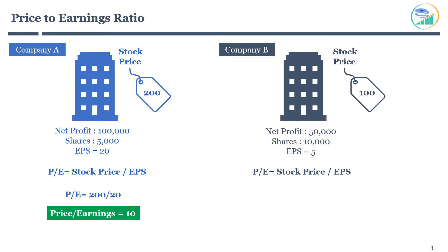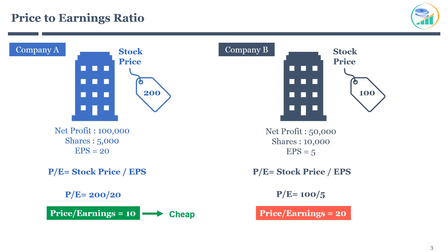Now it's time to calculate the P/E ratio for both companies, which is stock price divided by earnings per share. Company A is trading at $200 with an EPS of 20, giving a P/E ratio of 10 — meaning the stock is trading at 10 times its earnings. Company B is trading at $100 with an EPS of 5, giving a P/E ratio of 20 — meaning the stock is trading at 20 times its earnings. Based on P/E ratio, Company A seems to be better value, whereas Company B looks expensive.